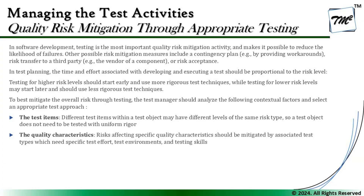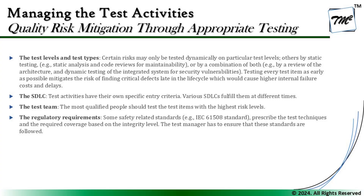The second important factor is the quality characteristic associated with the risk. Risks affecting specific quality characteristics should be mitigated by associated test types that require specific test effort, test environment, or testing skills. For example, you may need to hire a performance testing engineer for performance testing or a security testing engineer for security testing. These constraints are key factors to consider when defining the amount of testing to be done.